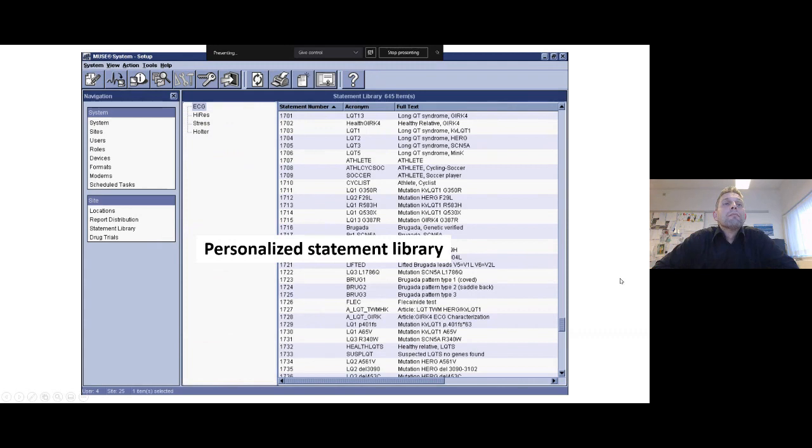We can also allow each researcher to build a personalized statement library if that is a requirement for a project. And here's an example from one of our projects where statements are related to the long QT syndrome. And this is very useful when we wish to tag ECGs so that we can find them later. For example, if we want to analyze a particular subgroup of our data, we have a meaningful tag for the groups.